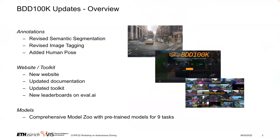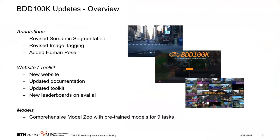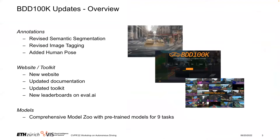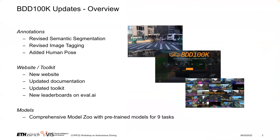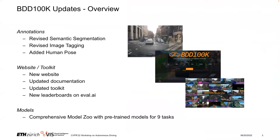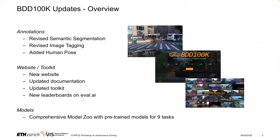Since this dataset has been first published at CVPR 2020, lots of things have happened. First of all, annotations: we revised the annotations for semantic segmentation and image tagging, and we have been adding human pose labels. The website and toolkit have been completely revised, so we have a new website, updated documentation, updated toolkit, and new leaderboards on eval.ai.